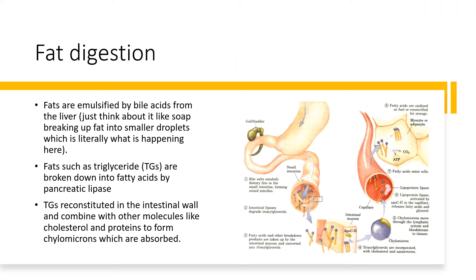The fat consumed from this meal enters my digestive system, and bile acids made in the liver function as a detergent to break up the fat into smaller droplets, increasing its surface area and making it easier to digest. Fats such as triglycerides are broken into fatty acids by pancreatic lipase. Once inside the intestinal wall, they're reconstituted into triglycerides and combine with other molecules such as cholesterol and proteins to form chylomicrons, which are absorbed into the bloodstream.